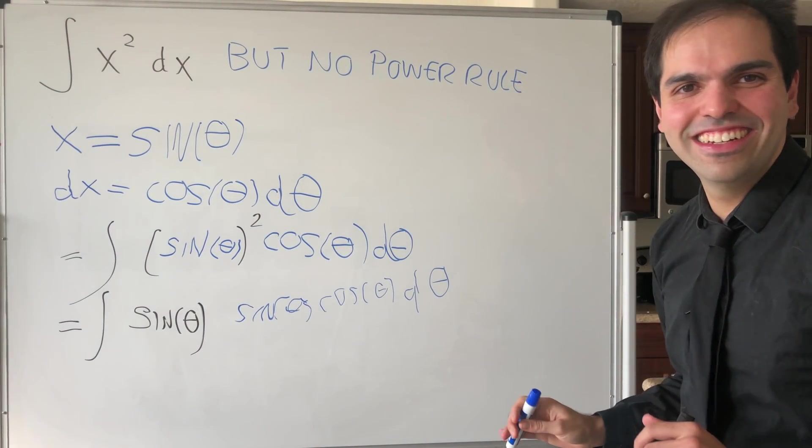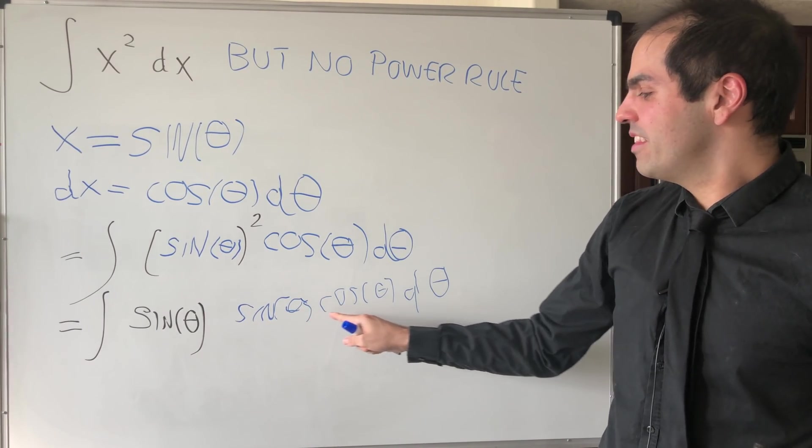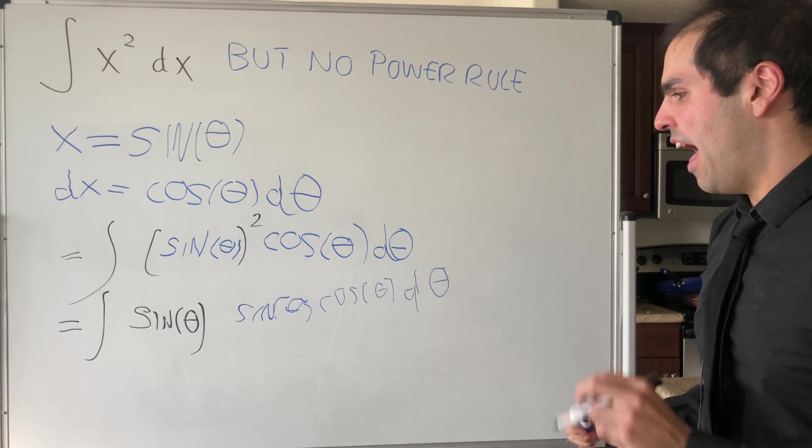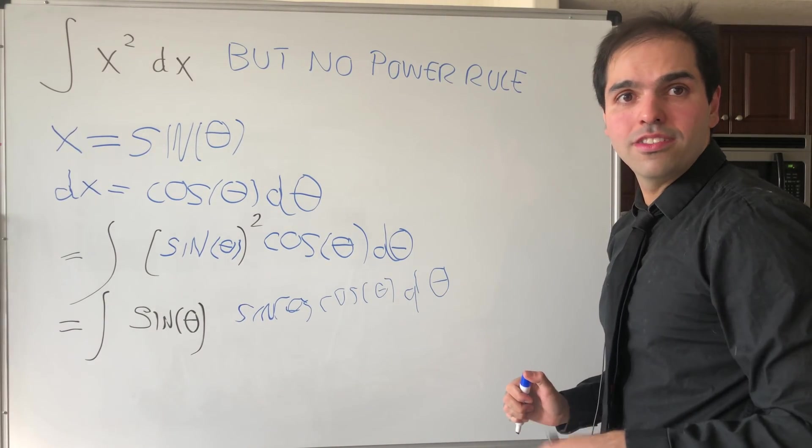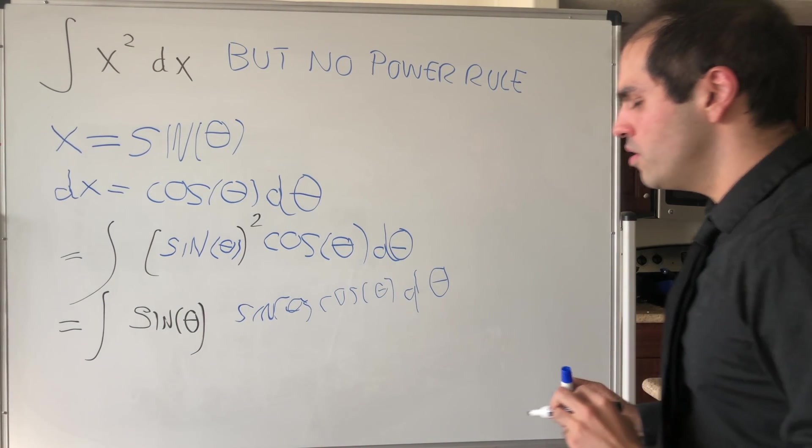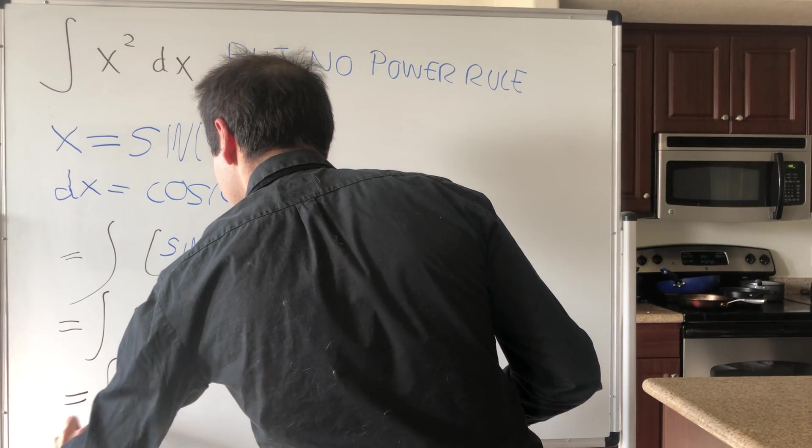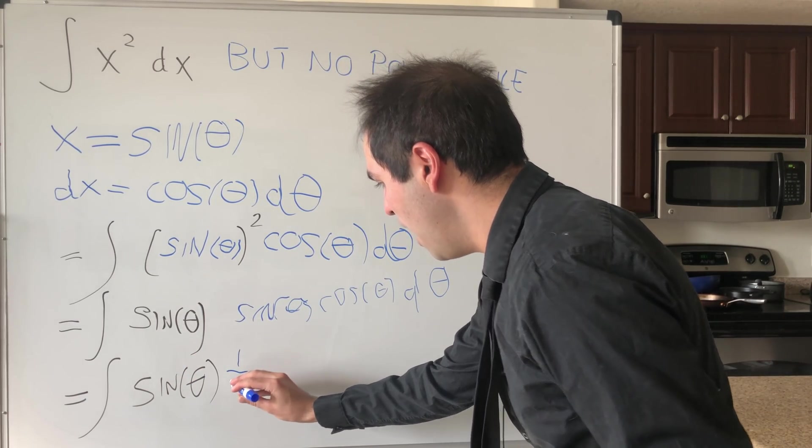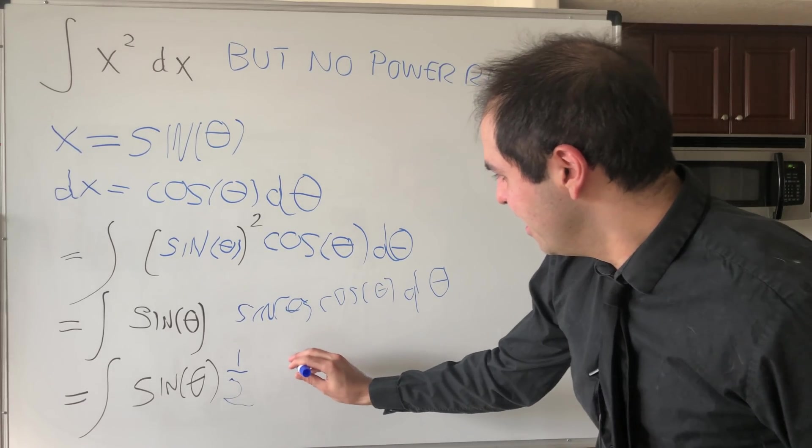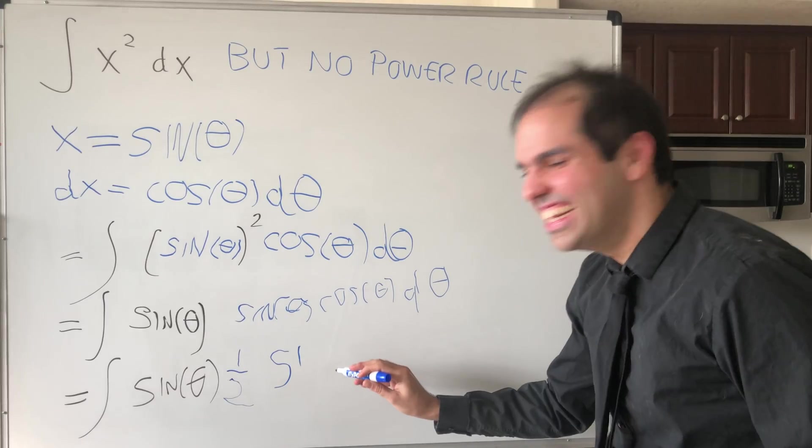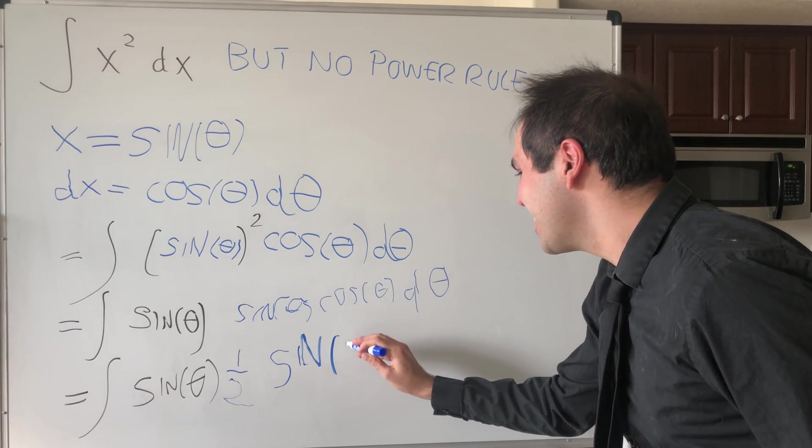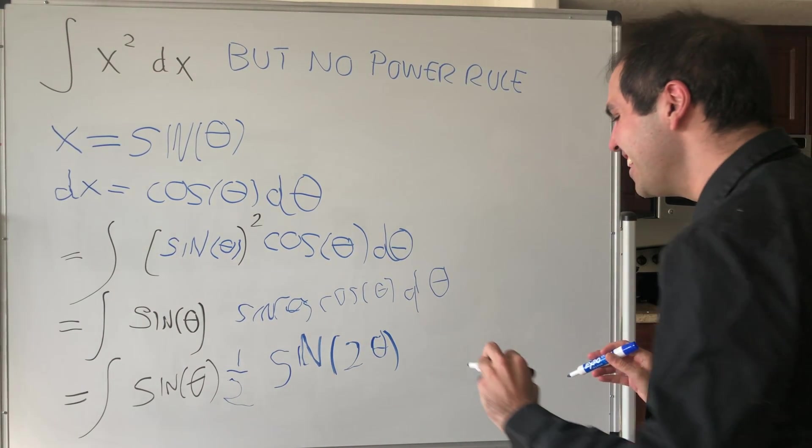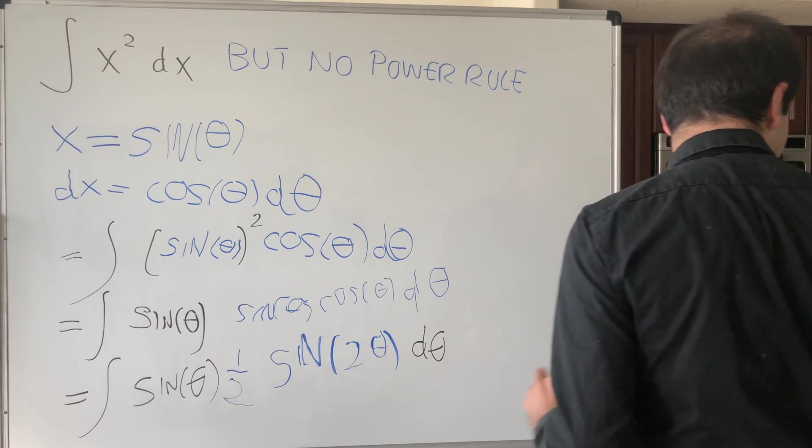That feels like first grade again. And then, but the nice thing is, sine of theta times cosine theta, you can write this as a half angle thing. So, or I guess one is to say half of sine of two theta. So this just becomes the integral of sine of theta times one half sine of two theta d theta.